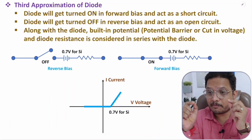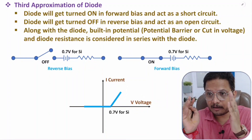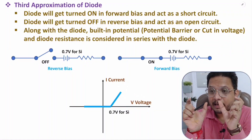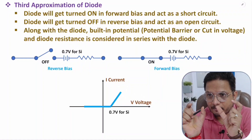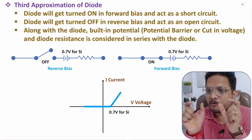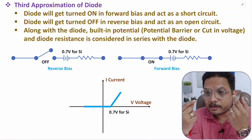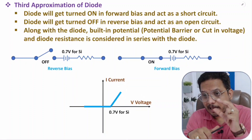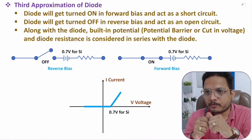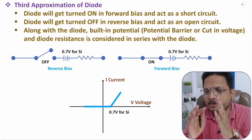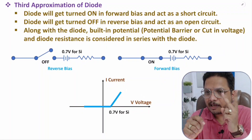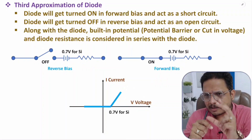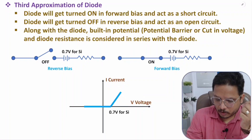Diode resistance has multiple components. When you fabricate a diode, there is a metallic junction at the P side and N side, which has ohmic resistance. There is also resistance from the P-type and N-type material — that resistance value decreases if you increase doping concentration. With lower doping, that bulk resistance is present, and junction resistance is also present. So there are three types: contact resistance, bulk material resistance, and junction resistance.